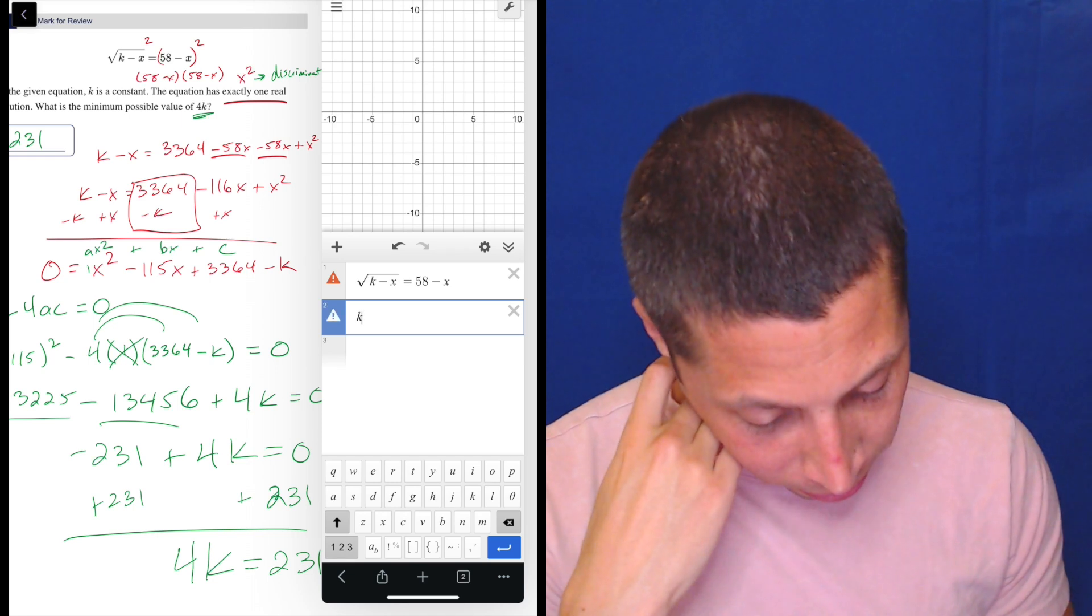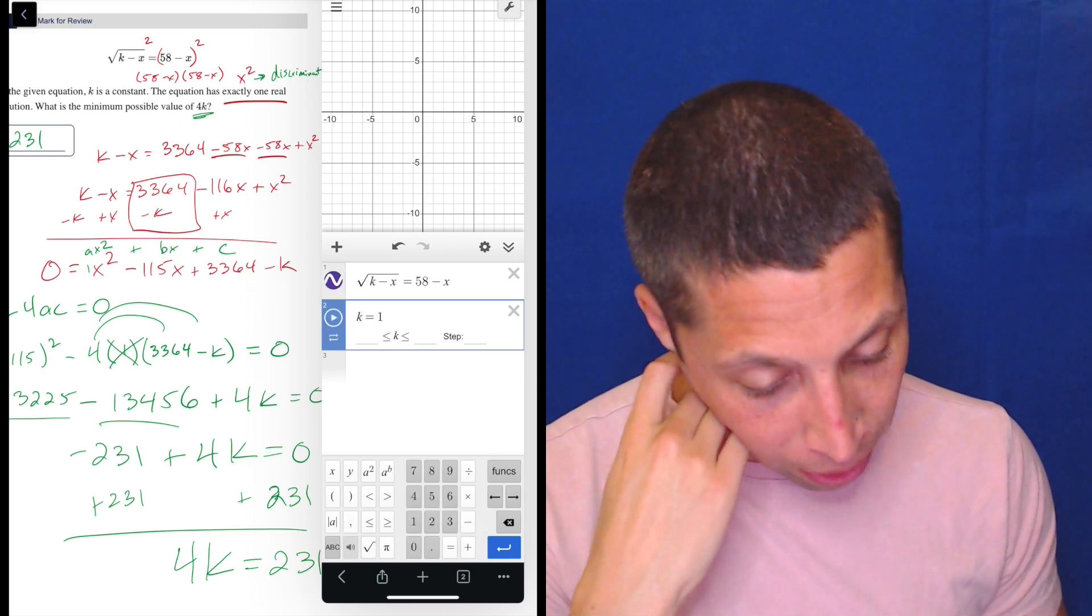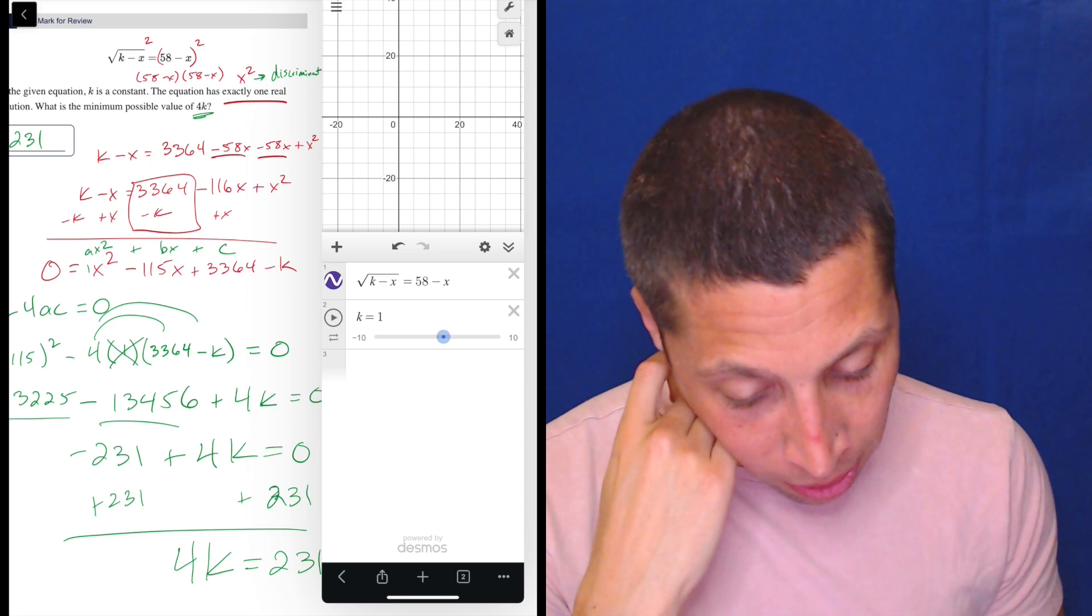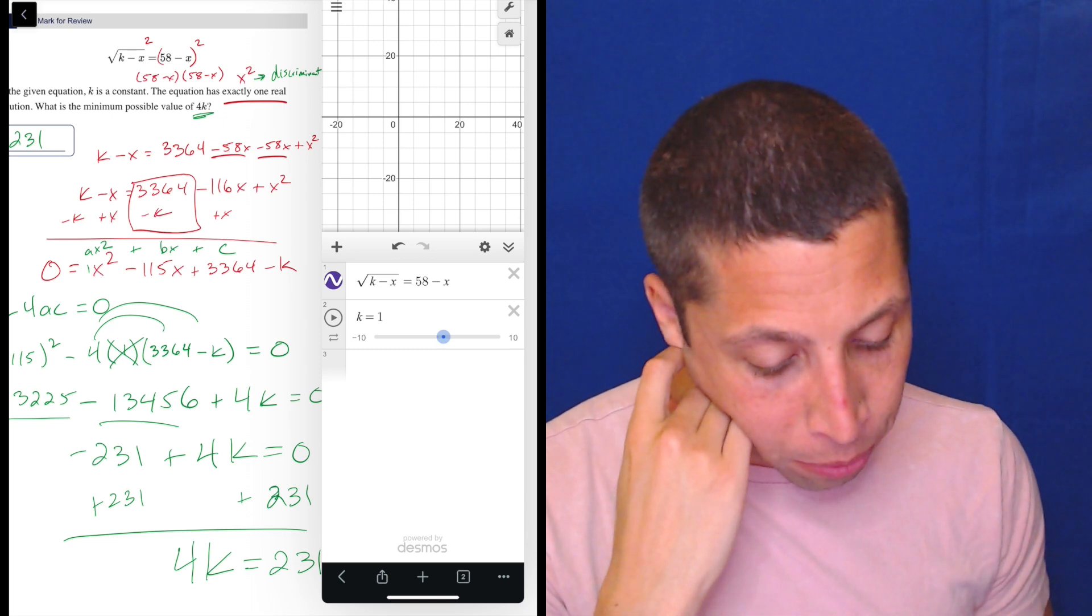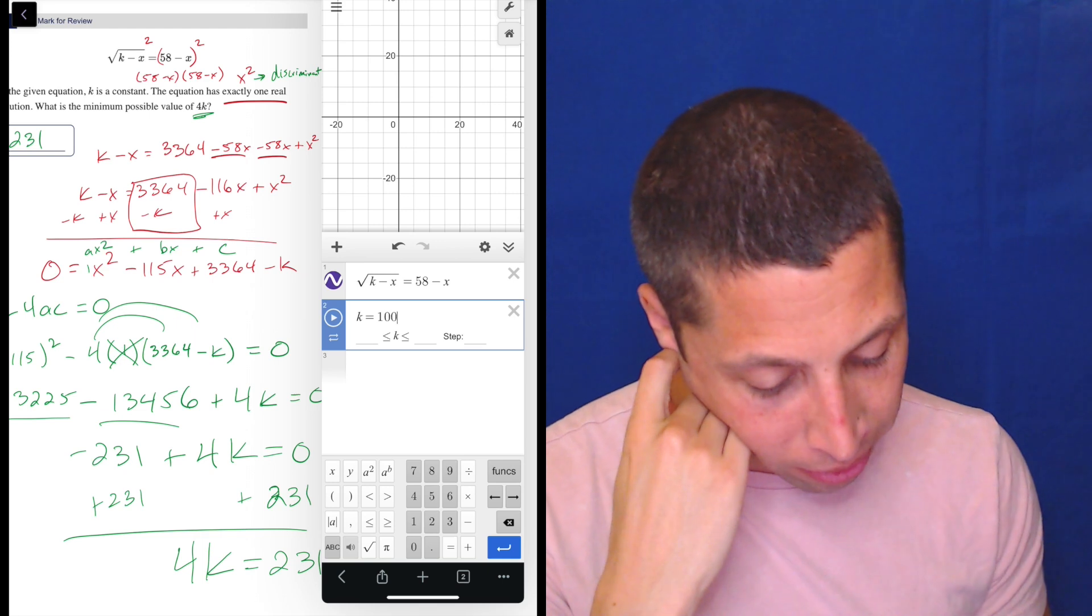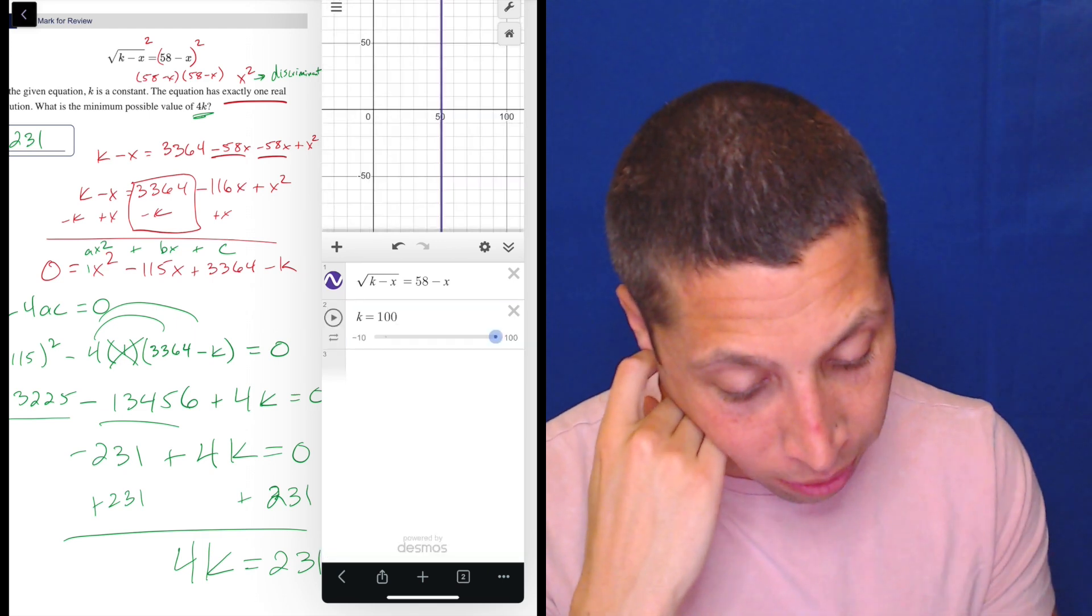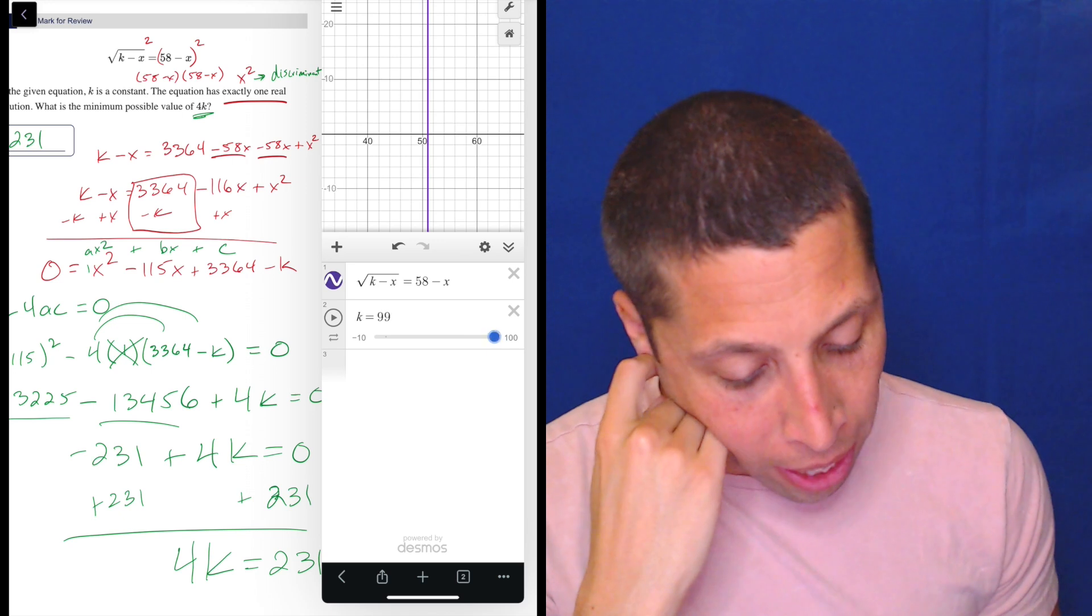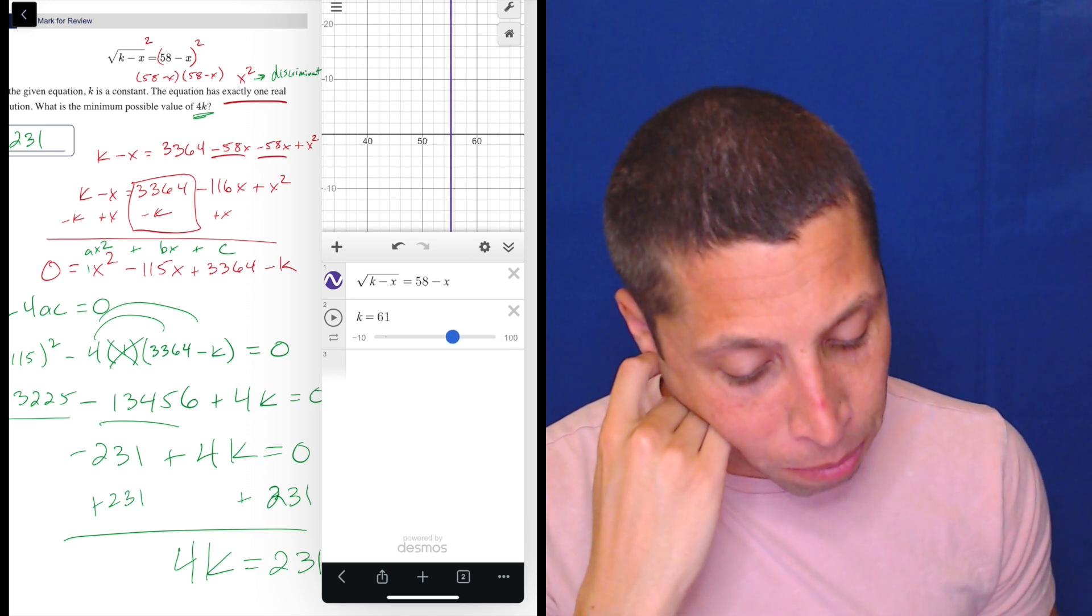But if I just tell it, just make k a number, it's going to be okay. So if I made k 1, nothing happens, right? I don't see anything. So when it's asking for the minimum value of 4k, that means there's also a minimum value of k. So I just need to maybe play with this until I get something. Now, if I make it 100, I get something. I get a number here. And if I shrink it, you can see that number is moving.